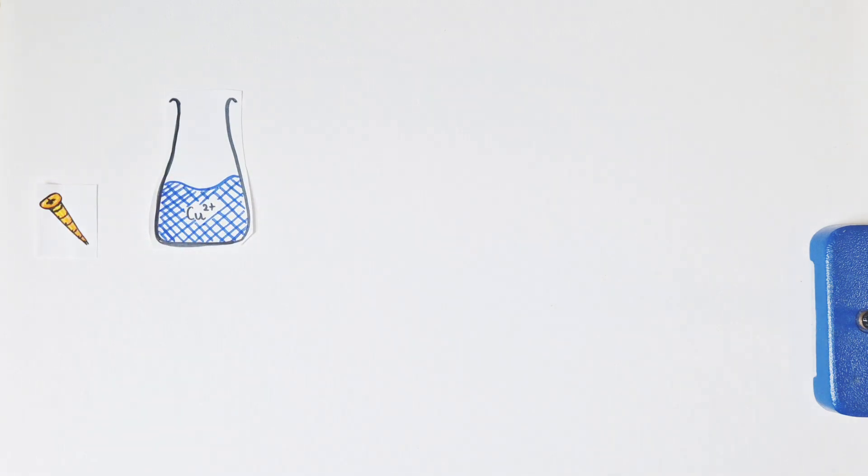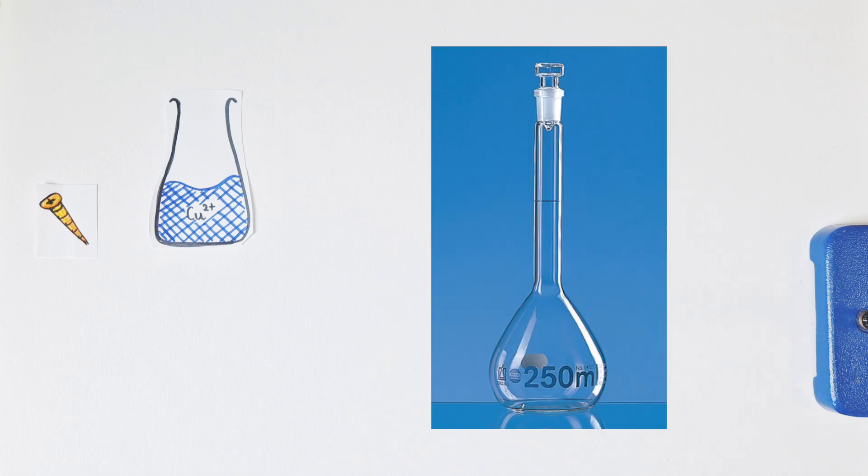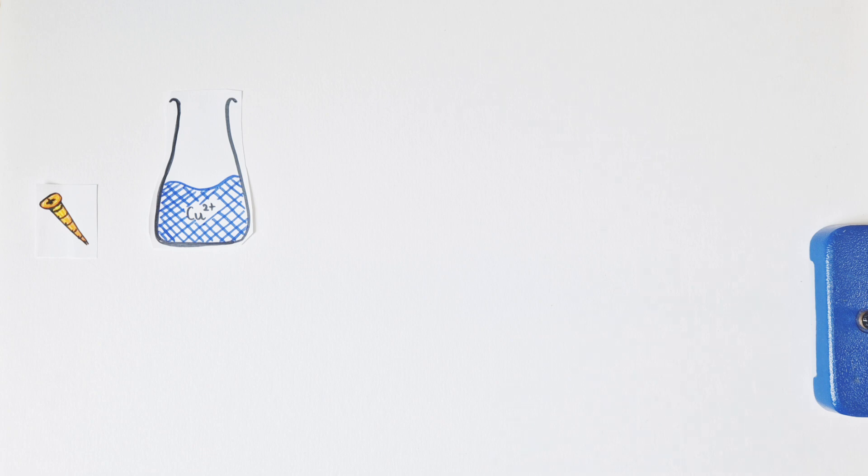We then make up that solution to 250 centimeters cubed with distilled water using a volumetric flask, and then we can take 25 centimeter cubed samples or aliquots of that copper 2+ ion solution to carry out our titration at a later stage.